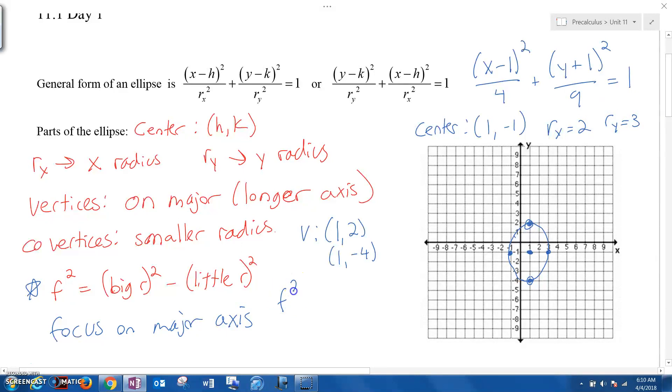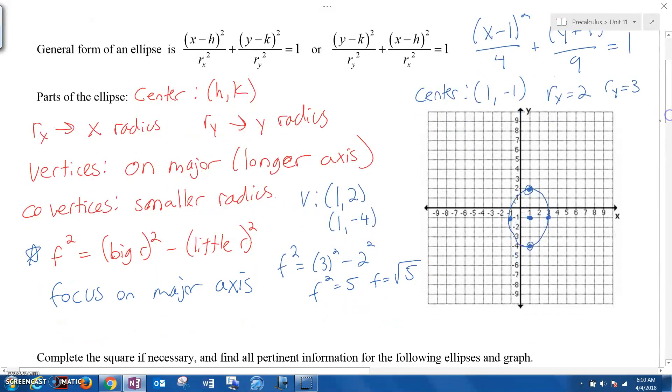So for this problem, f² is going to be the big radius squared minus the little radius squared. So we get 9 minus 4, which is f² = 5. Which means f is equal to the square root of 5. Now what this means is the foci are root 5 away from the center in the direction of the vertices. They're with the vertices. So root 5 is a little more than 2.